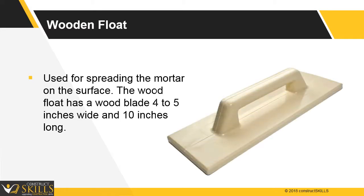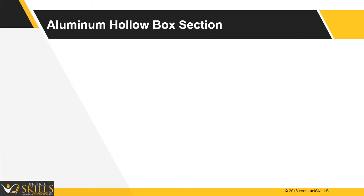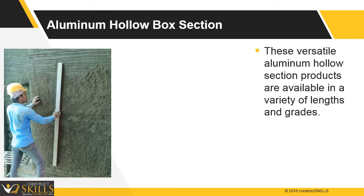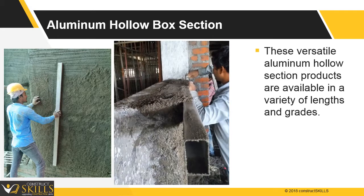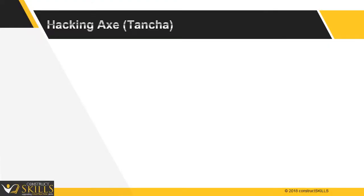Aluminium hollow box section: these versatile aluminium hollow section products are available in a variety of lengths and grades. They are used to level the plaster and to remove the undulating surface.